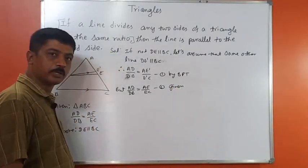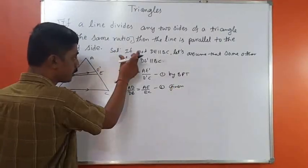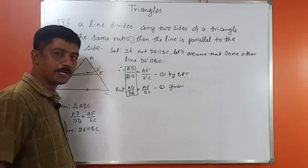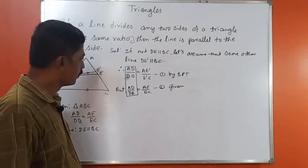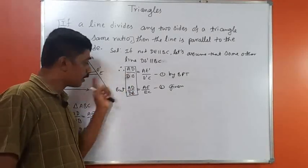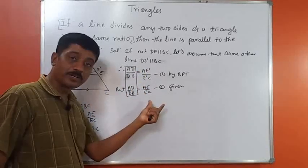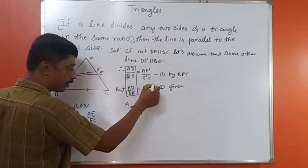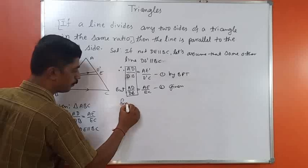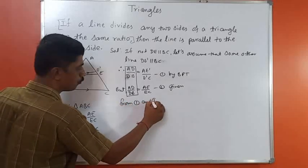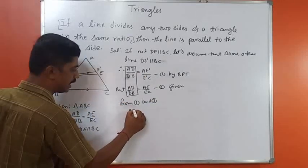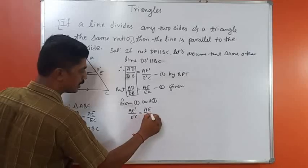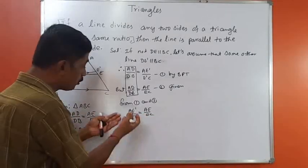Comparing equations 1 and 2: the left-hand sides are both AD/DB, so they are equal. Therefore the right-hand sides must also be equal. From equations 1 and 2, we get AE'/E'C = AE/EC.